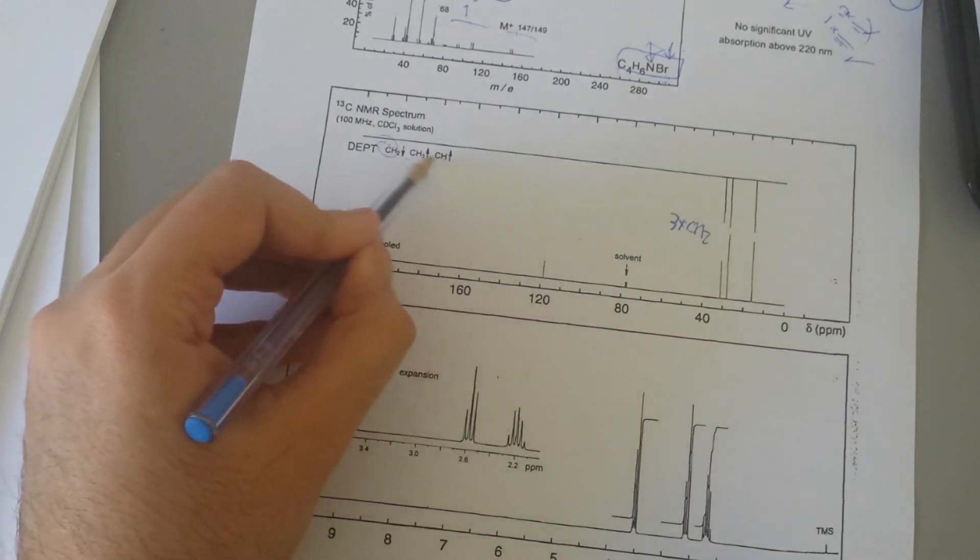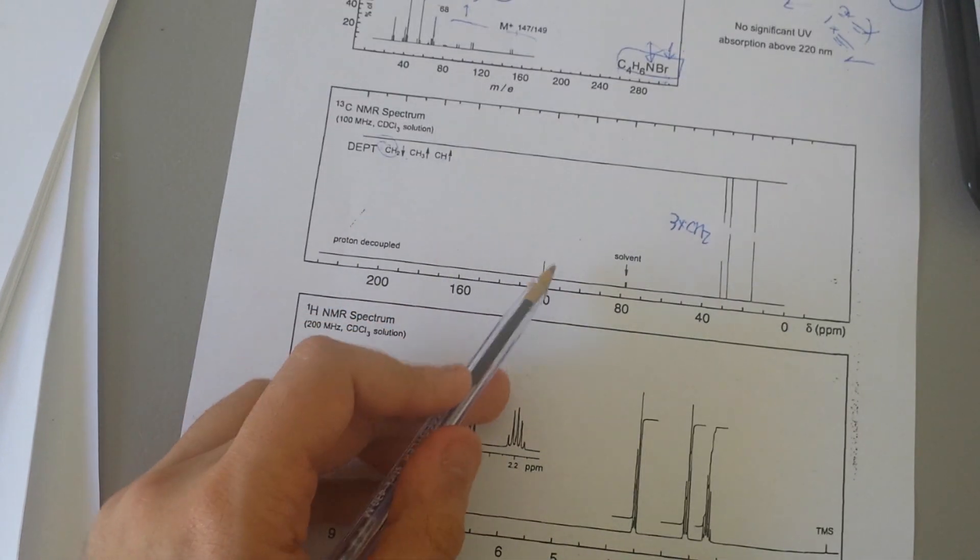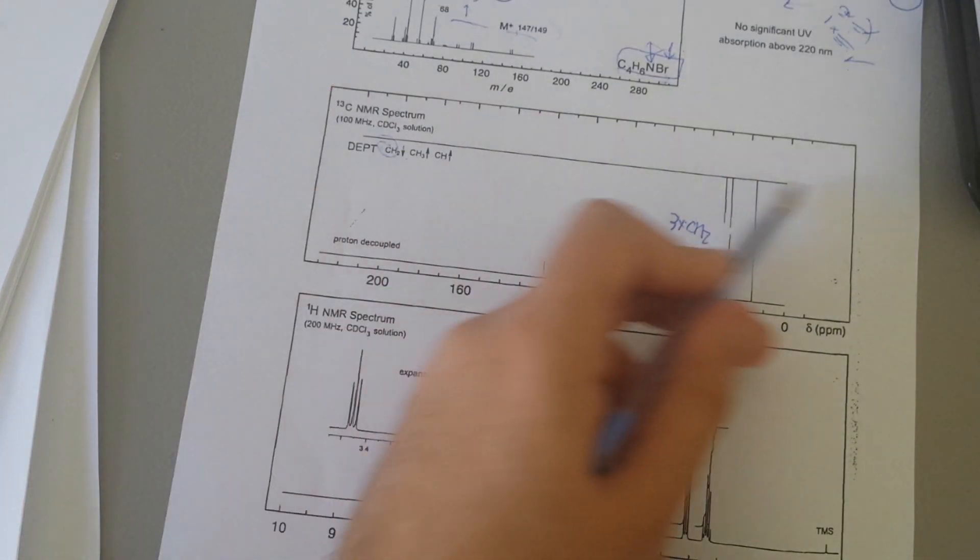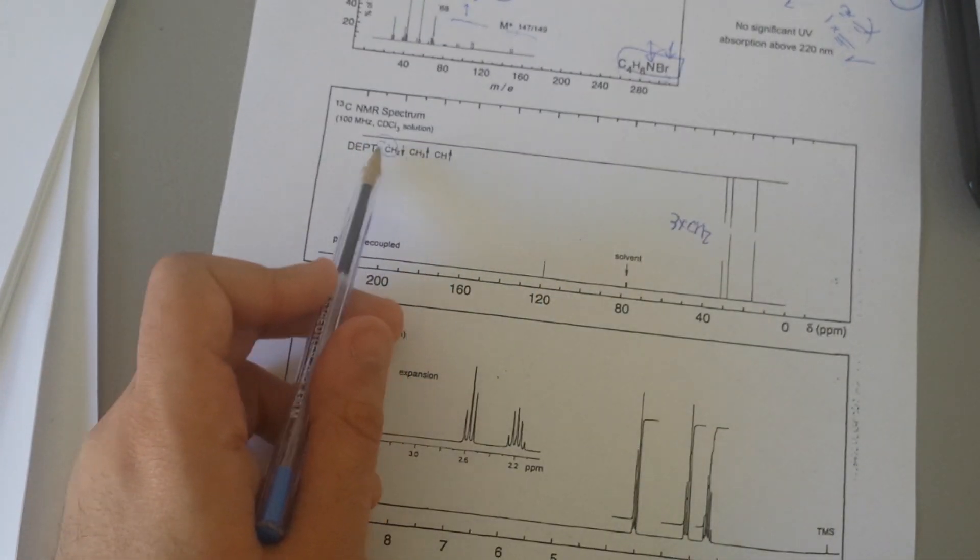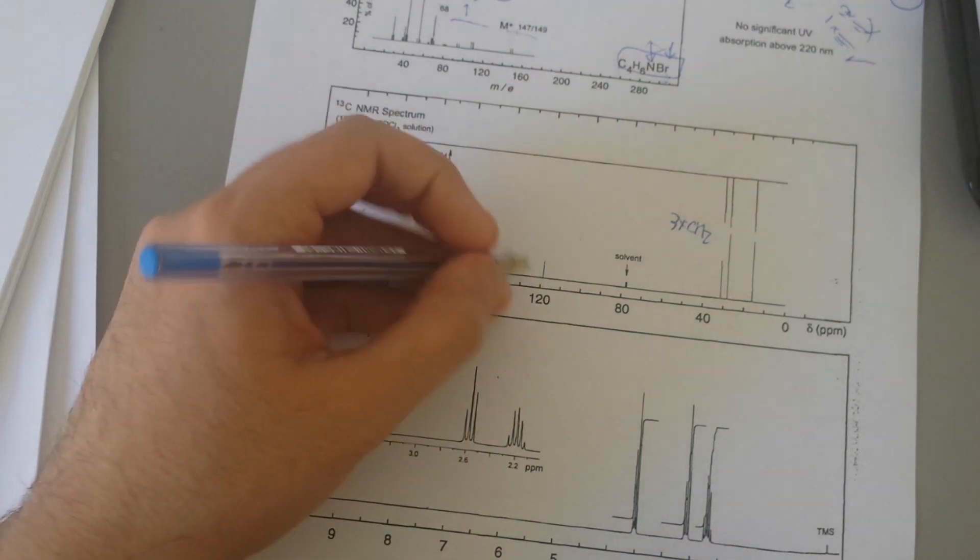If it's, then you have to find out which, but in this case, it's pointing down. So it means we are dealing with CH2. Usually you will be given this type of carbon NMR that you can easily tell where is CH2, where is not. So then we have one here.